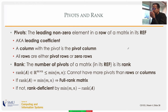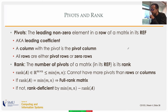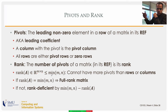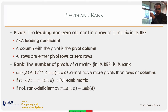We'll see different definitions of rank in coming weeks, but they are all equivalent — just different perspectives. For a matrix with m rows and n columns, the rank is at most the minimum of m and n, since you can't have more pivots than rows or columns. For a 3×4 matrix, the maximum rank is three. If the rank equals the minimum of rows and columns, it is full rank; otherwise it is rank-deficient.